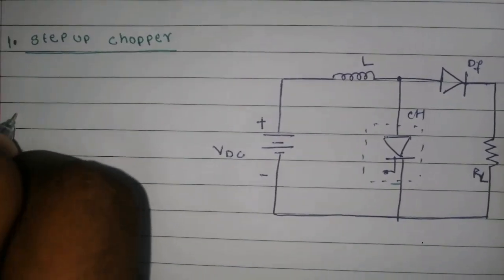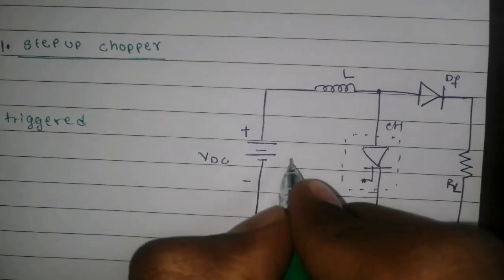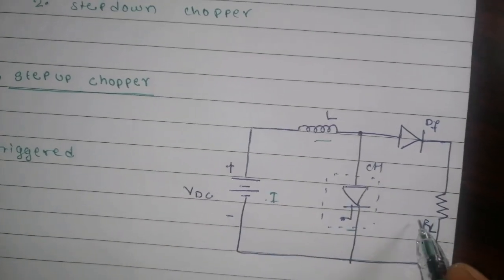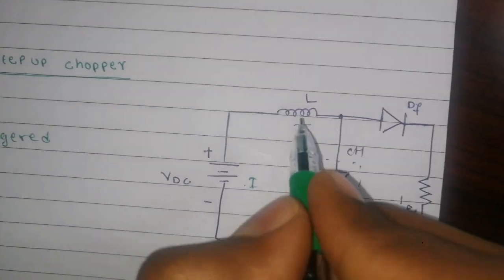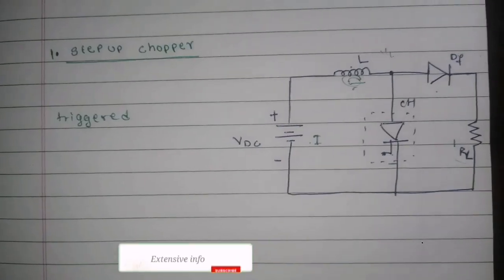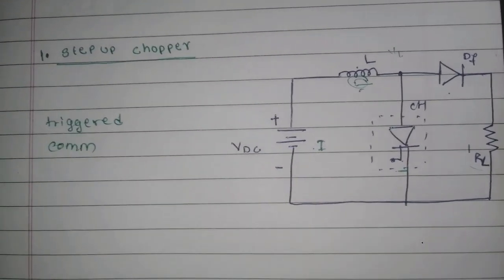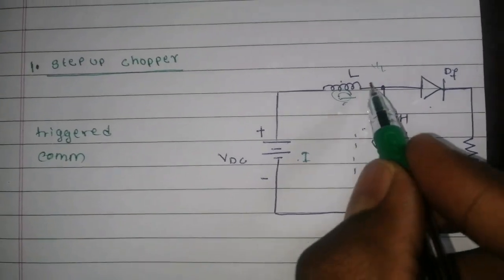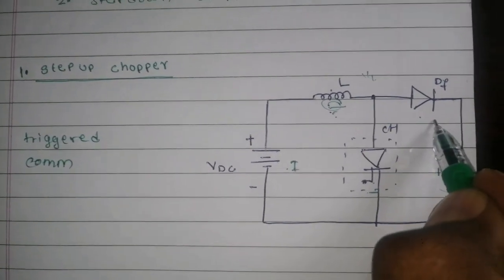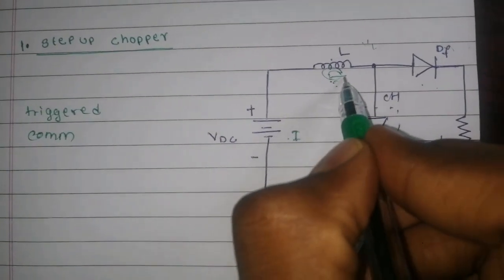When the thyristor is triggered, the current flows from inductor to load and some energy is stored in this inductor. The inductor is close to the load through this freewheeling diode.